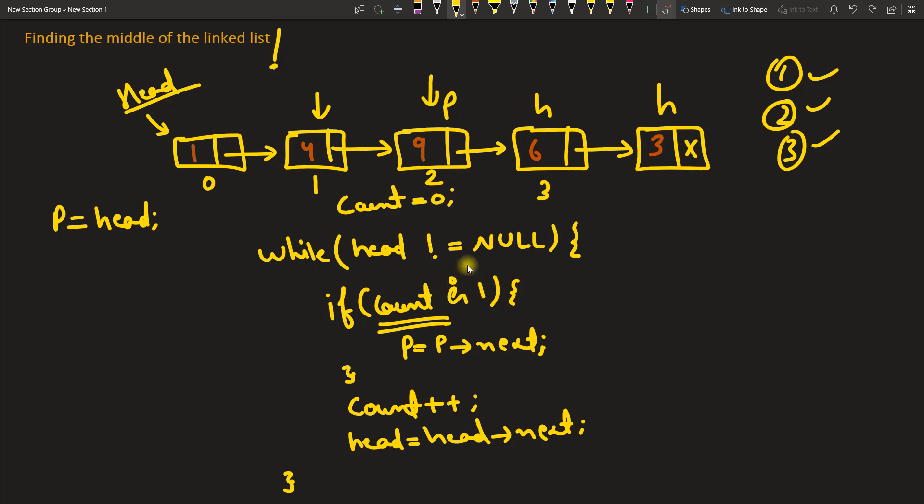So p will only increment when count is an odd number. This is where you will compare that it is odd or not. So if count is odd, then only you will increment p. Otherwise you will always increment head and you will always increment count. Maybe this is not covering the corner cases and all, but you got the idea right?